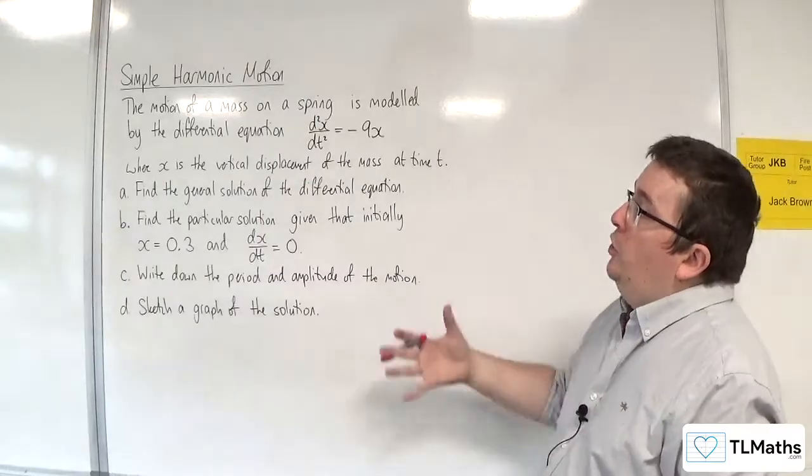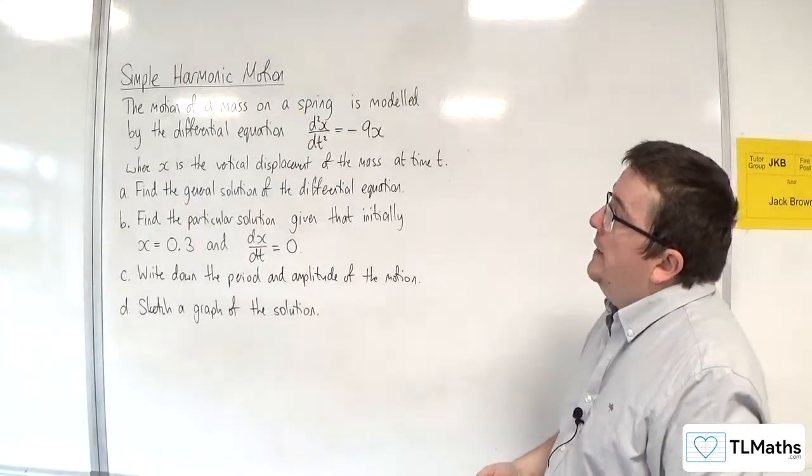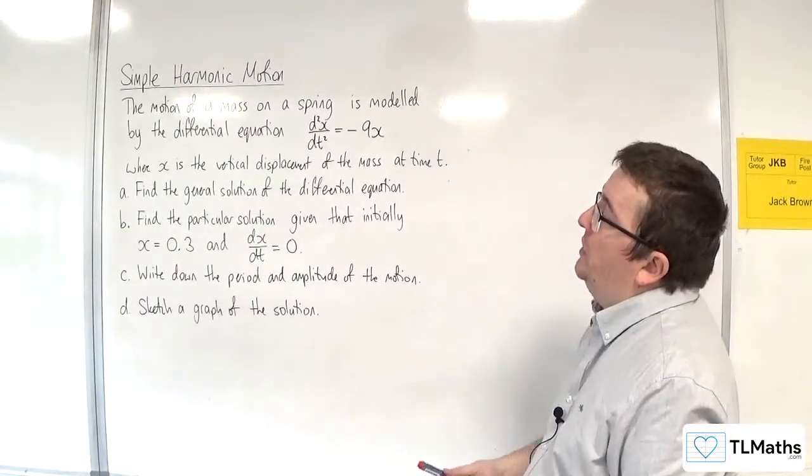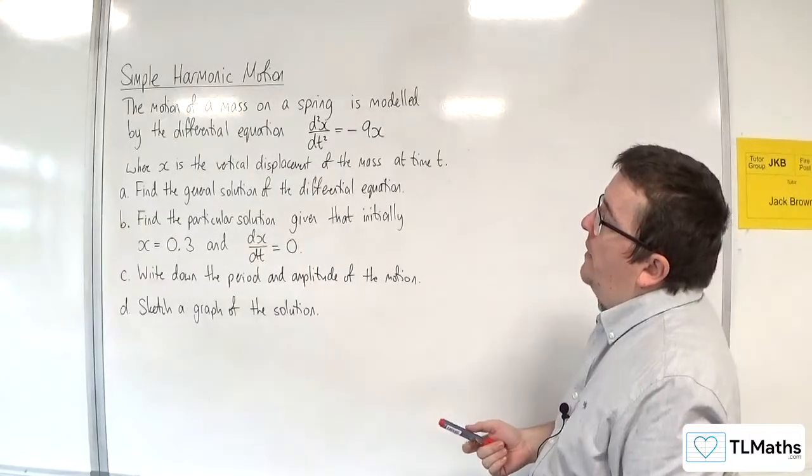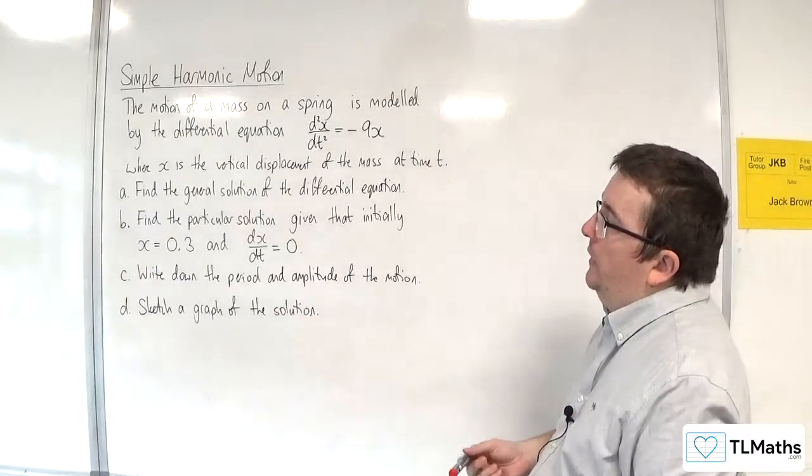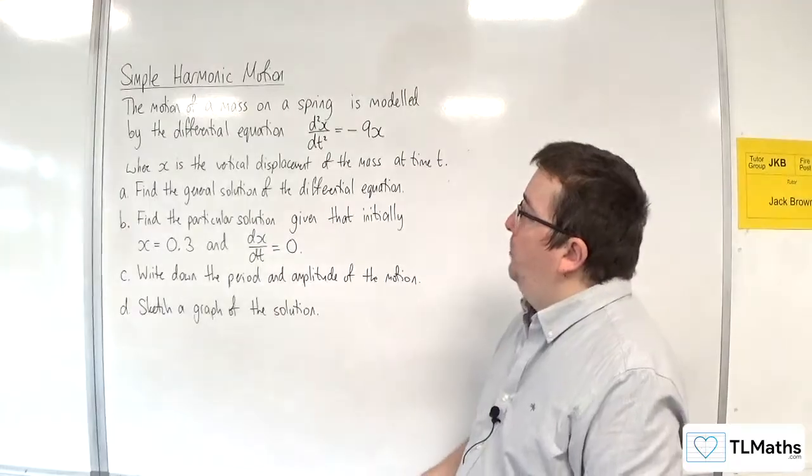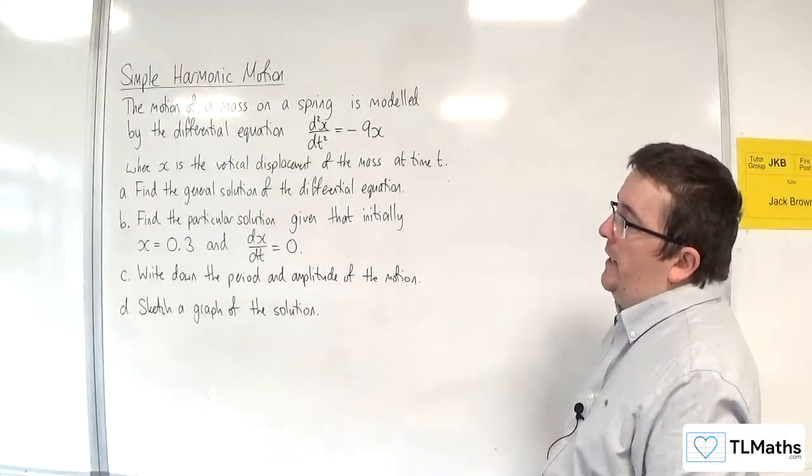In this problem, the motion of a mass on a spring is modeled by the differential equation d2x by dt squared is equal to minus 9x, where x is the vertical displacement of the mass at time t.